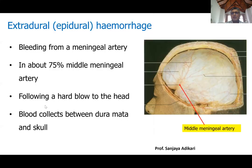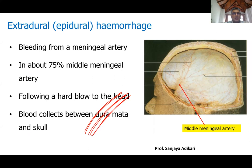Now for the first type of intracranial extra-cerebral hemorrhage: extradural or epidural hemorrhage. The bleeding happens between the outer layer of the duramater and the inner table of the skull. Since the duramater is attached to the skull, the blood clot develops under pressure and cannot freely fill, so it separates the duramater slowly. This results in a biconvex-shaped clot — narrow at the edges, large at the center.